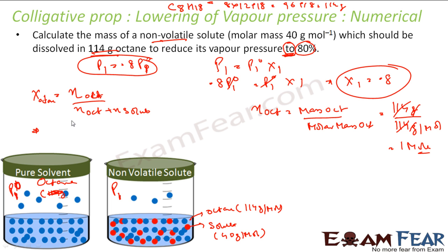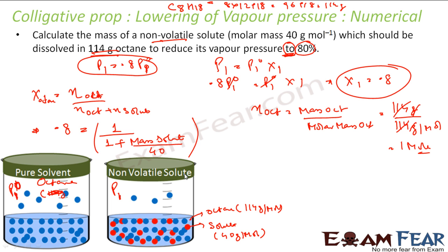Putting in the values: mole fraction of octane = 0.8 = 1 divided by (1 plus moles of solute), where moles of solute equals mass of solute divided by molar mass of solute (40 gram per mole). Solving this equation gives mass of solute as 0.1 gram.